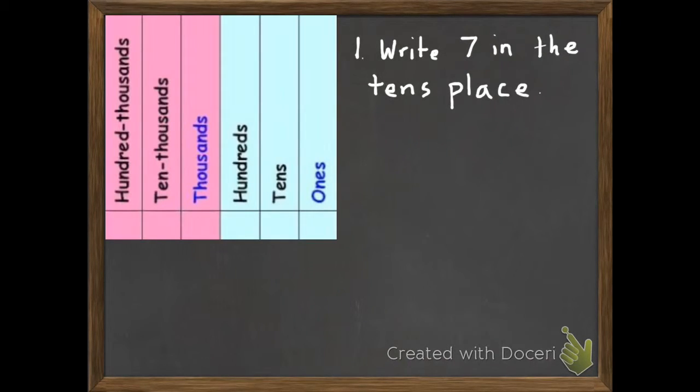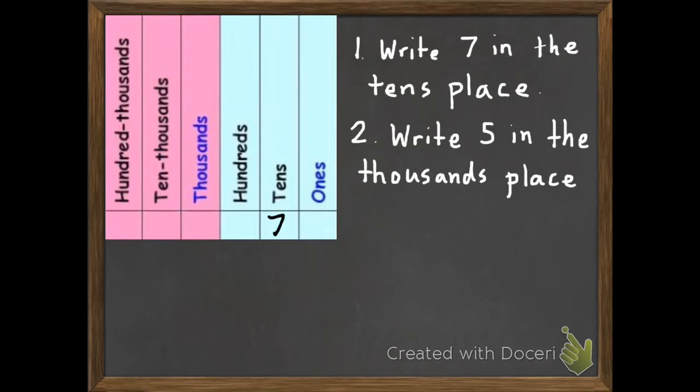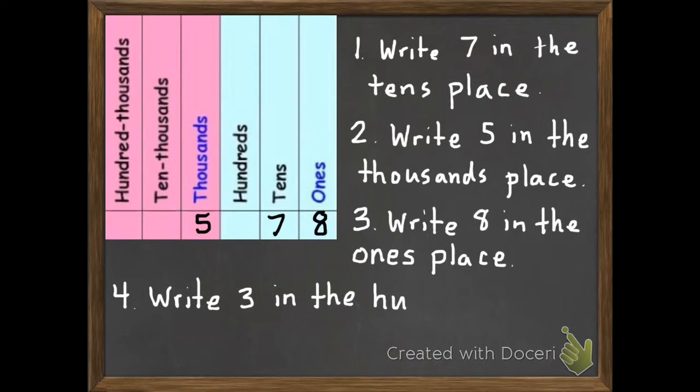For my second example, I need to first write seven in the tens place, write five in the thousands place. So we find the thousands, put in my five. Third, I need to write an eight in the ones place. So that's there on the very right. And last of all, I need to write a three in the hundreds place. Then I add my comma there between the five and the three. And there I have my number.